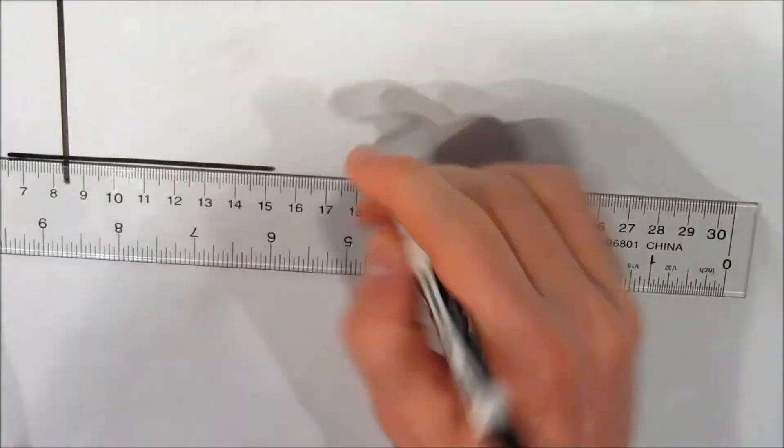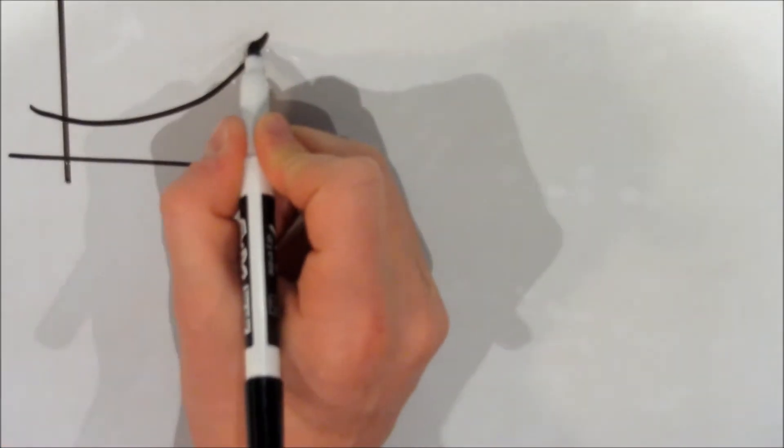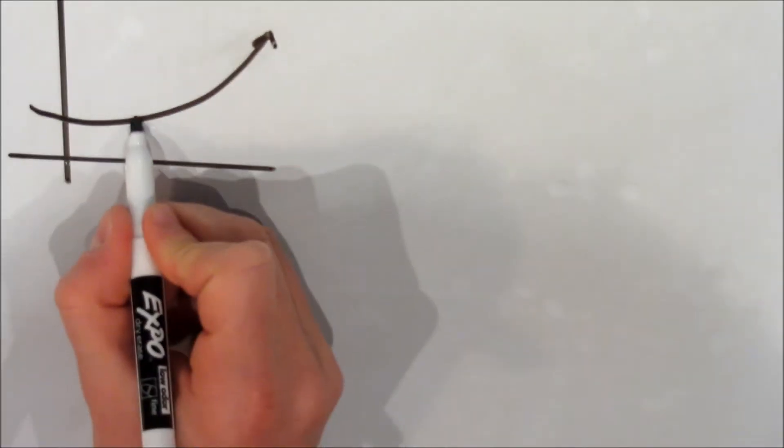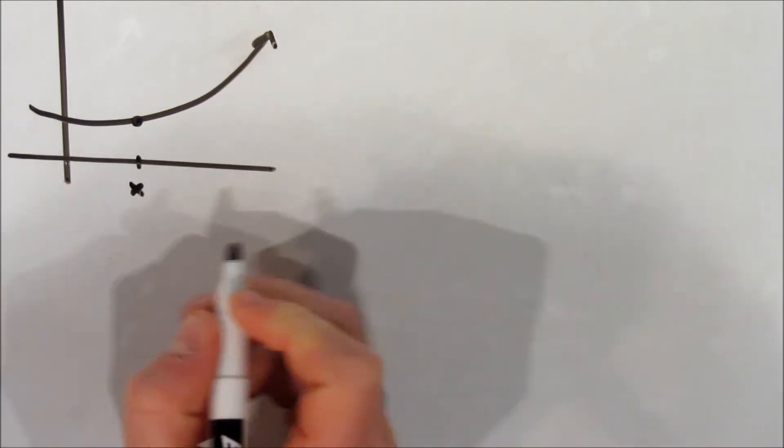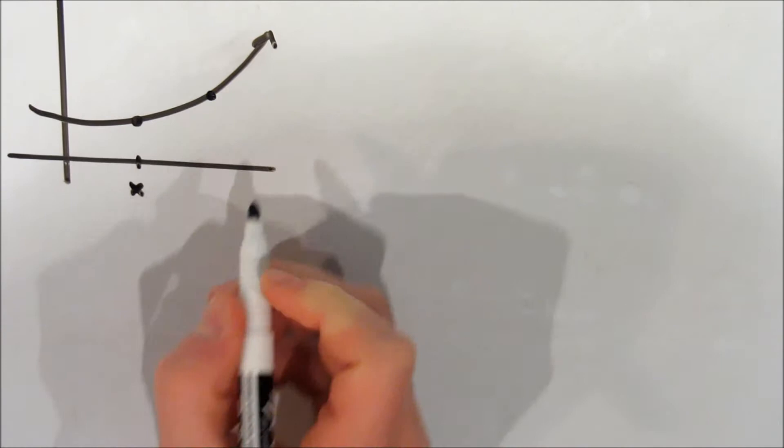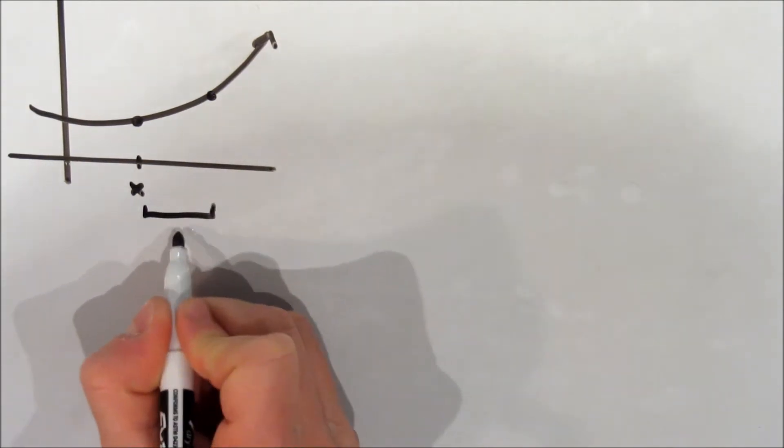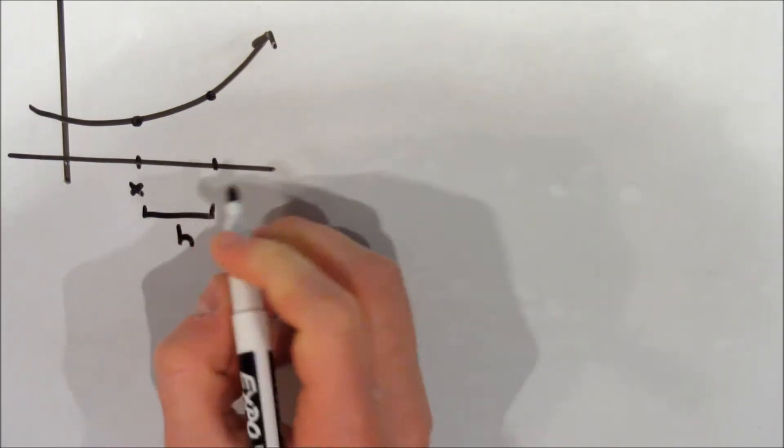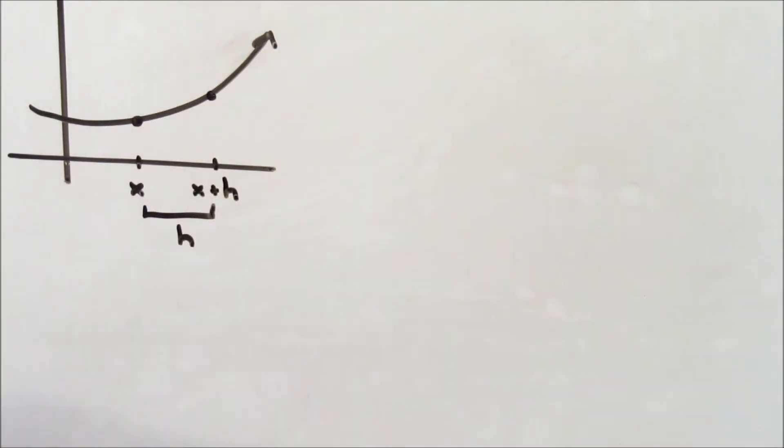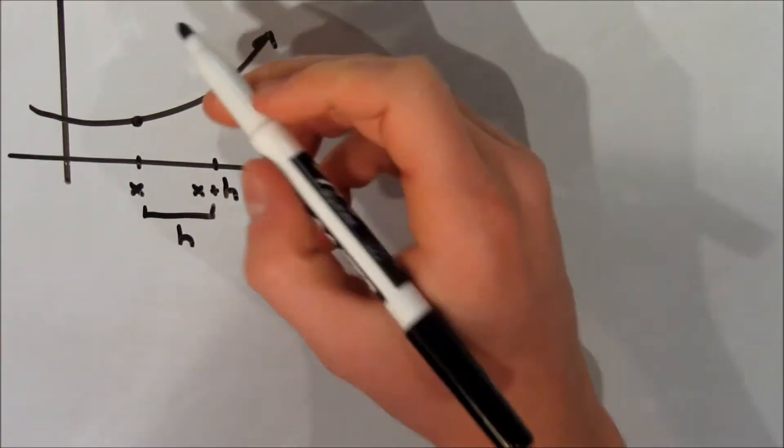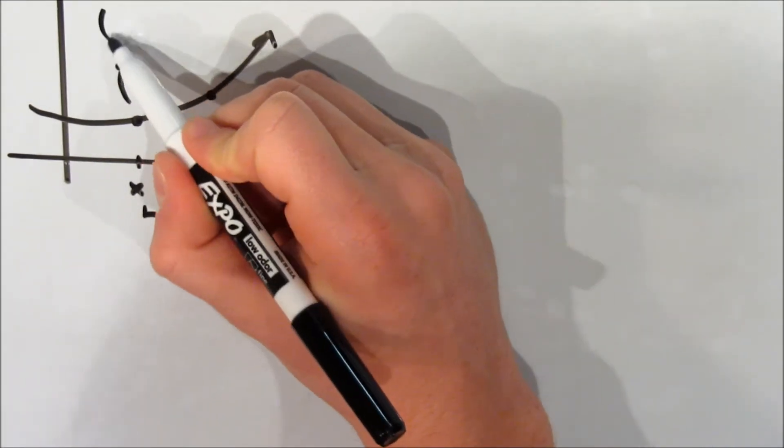Alright, now let's draw that graph again quickly and try to generalize this concept. Let's let x be our original point that we're trying to find the tangent line of. Now, let's draw our arbitrary point and let's call the difference between their x-coordinates h. So, the x-coordinate of this new point is x plus h. We know that the y-coordinate of our first point is f of x.